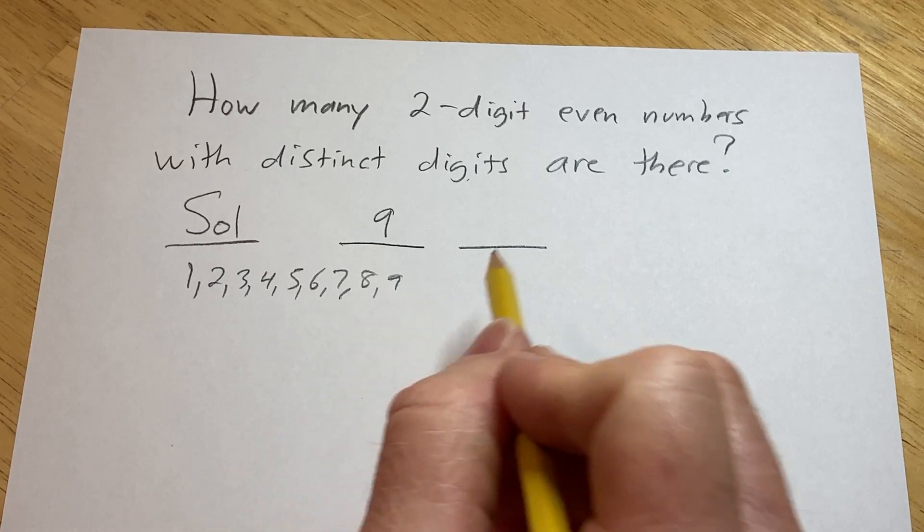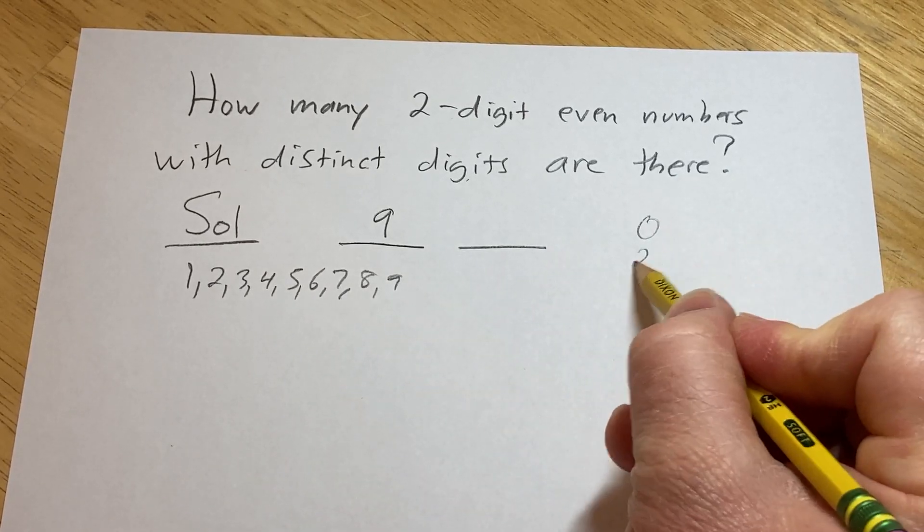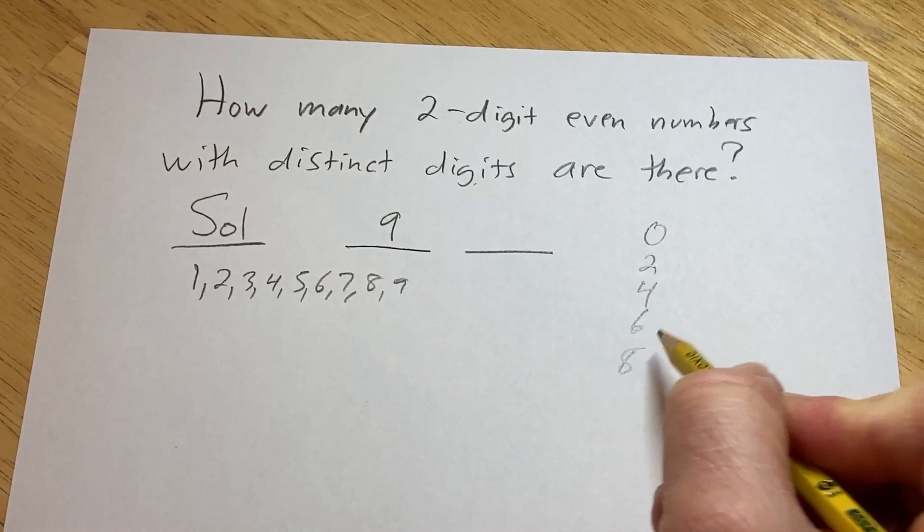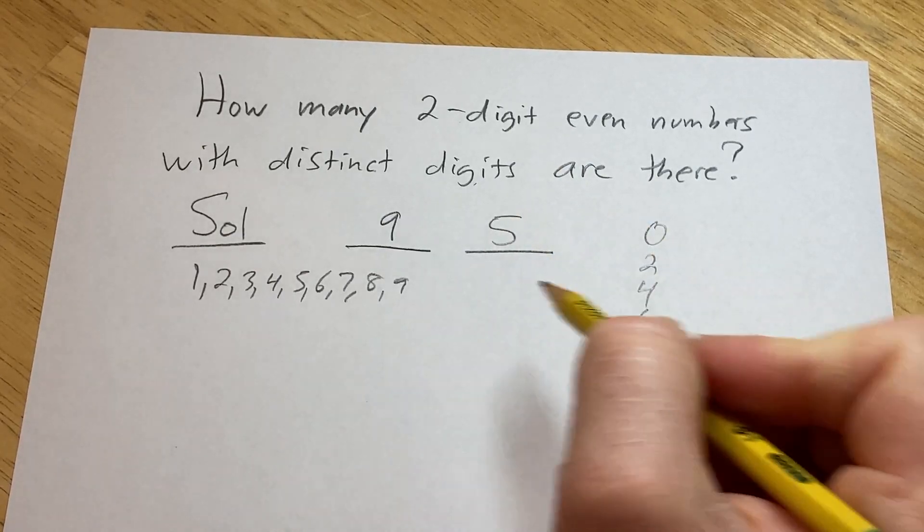The second digit, because it's even, has to end in a zero, two, four, six, or eight. So there's five choices for the second digit.